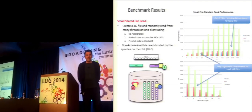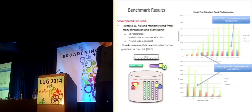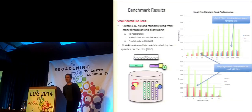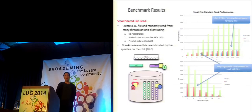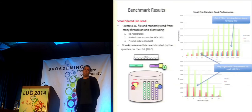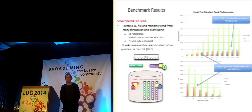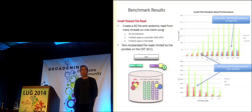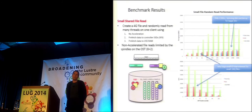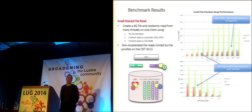Audience asks whether there's been any thought to automatically triggering FAdvise dynamically in a running environment. Speaker says that would be very cool. He mentions familiarity with Grid Engine's Job Submission Verifier (JSV), which allows interrogating job scripts at submission time. In theory, you could have intelligence around what the user is requesting and decide whether to run LFS FAdvise based on that — and that's exactly the kind of problem they'd like to investigate further.